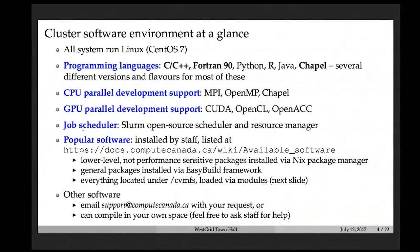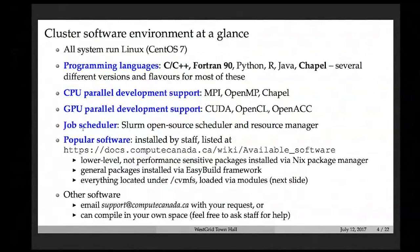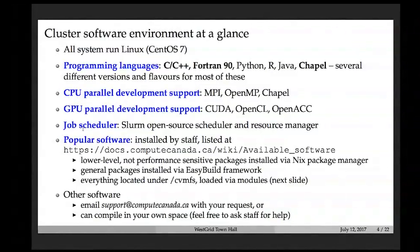For programming languages, we provide everything standard for an HPC environment: traditional compiled languages like C, C++, and Fortran in multiple configurations. We also provide non-HPC languages like Python, R, and Java. We're also working to configure Chapel — an open-source language from Cray — which will be available on both Cedar and Graham in a few days.